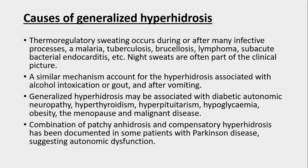Causes of generalized hyperhidrosis: thermoregulatory sweating occurs during or after many infective processes including malaria, tuberculosis, brucellosis, lymphoma, subacute bacterial endocarditis, and others — night sweats are often part of the clinical picture. A similar mechanism accounts for hyperhidrosis associated with alcohol intoxication, gout, or after vomiting. Generalized hyperhidrosis may also be associated with diabetic autonomic neuropathy, hyperthyroidism, hyperpituitarism, hypoglycemia, obesity, menopause, and malignant diseases.